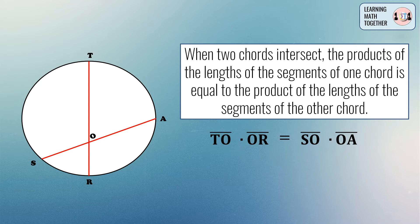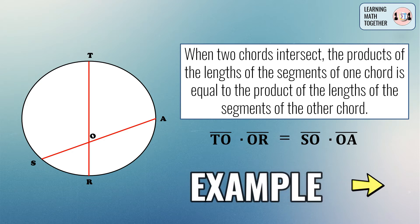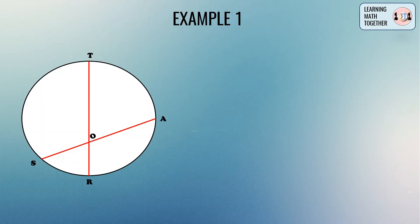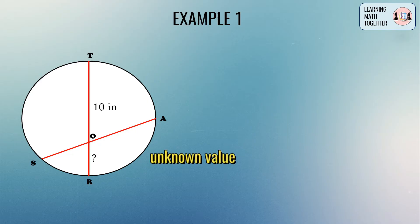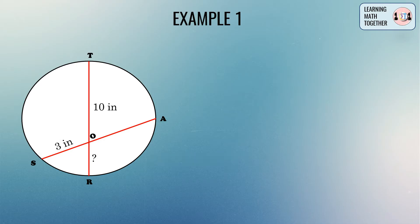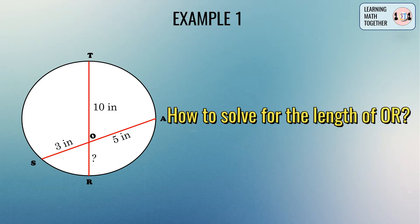To understand this theorem better, let's have an example. For example number one, let us give values to this figure. Line segment TO is equal to 10 inches, line segment OR is the unknown value, line segment SO is equal to 3 inches, and line segment OA is equal to 5 inches.